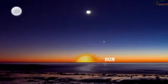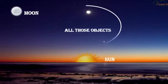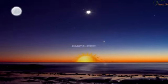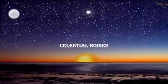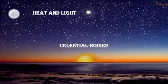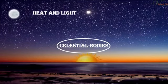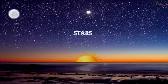The sun, the moon, and all those objects shining in the night sky are called celestial bodies. They have their own heat and light, which they emit in large amounts. These celestial bodies are called stars.